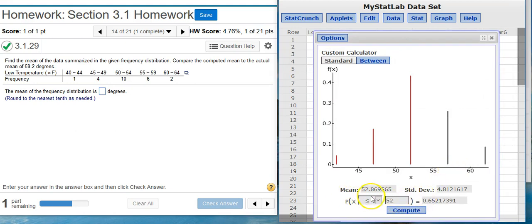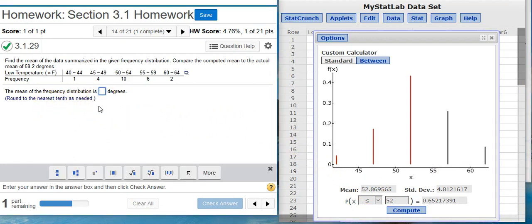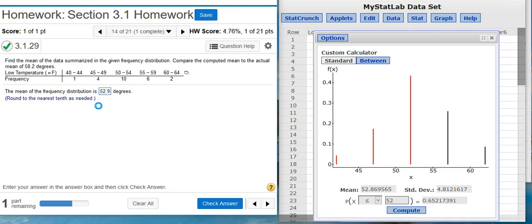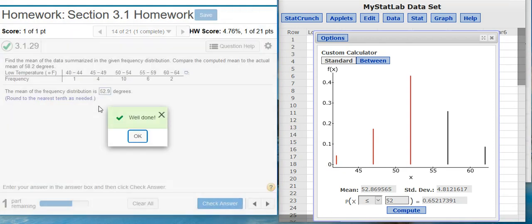Look here! The mean value, 52.869565. We want to the nearest tenth, so I round that to 52.9. Well done!